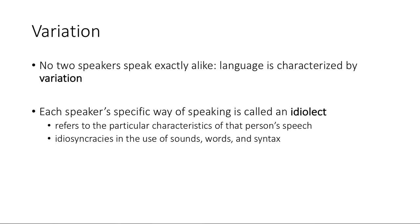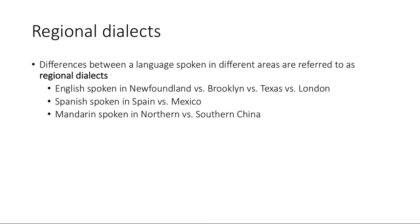Language is characterized by a huge amount of variation. Even when two people seem to have the exact same accent, no two speakers are going to speak exactly alike. Each speaker's specific way of talking is called an idiolect — the particular characteristics of that person's speech. However, we also see a lot of systematic variability, and we're going to be talking about that for most of the rest of the lecture. One very familiar area is regional dialects.